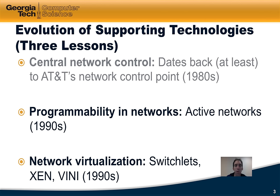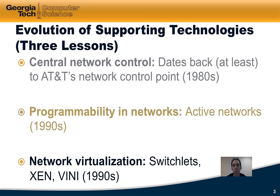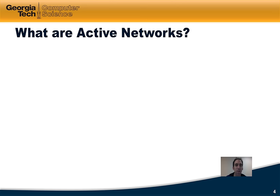To remind you where we are in this module, we just completed a lesson on the history of central network control, which dates back at least to the 1980s and AT&T's network control point. We're now going to study the origins of network programmability, in particular its roots in the active networks projects of the 1990s.